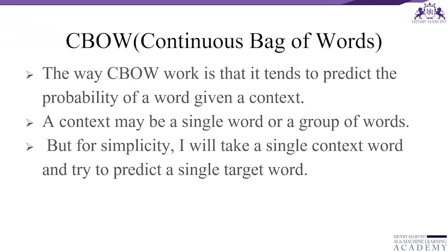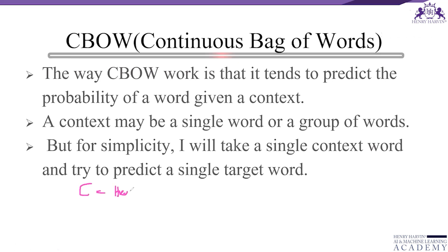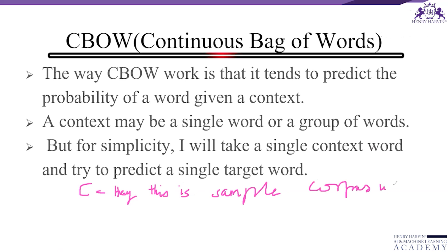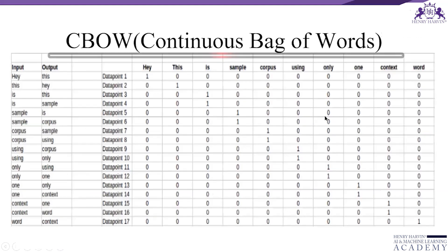CBOW stands for Continuous Bag of Words. The way CBOW works is that it tries to predict the probability of a word given a context. The context may be a single word or a group of words. For simplicity, we take a single context word and try to predict a single target word. Suppose we have a corpus which is a sample corpus using only one context word.